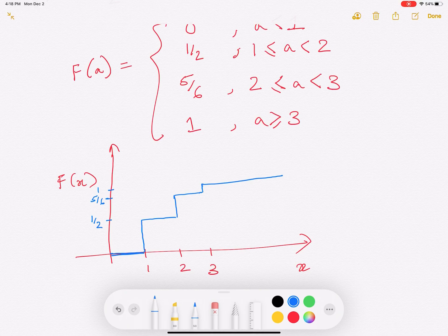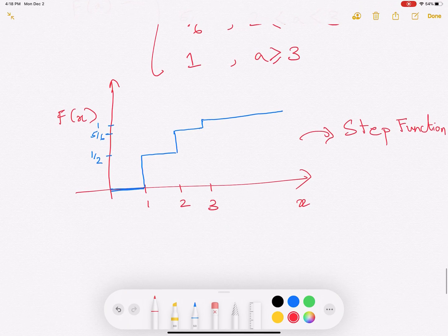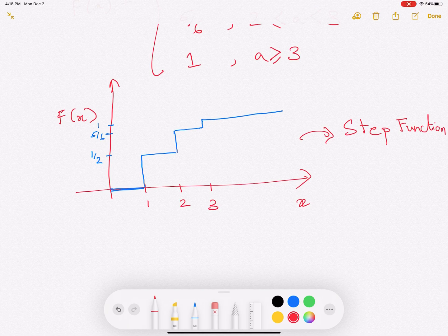So this is how CDF looks like. It gives a step function. It's a step function. So a CDF will constantly increase and it will become 1. At that time, it will become constant.